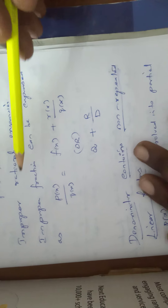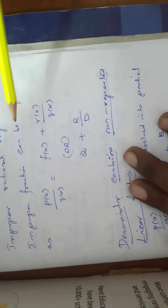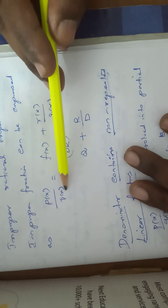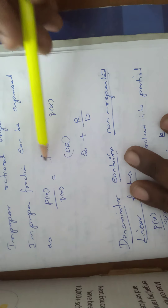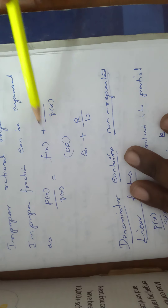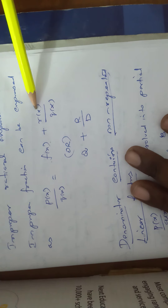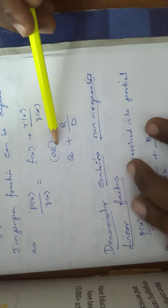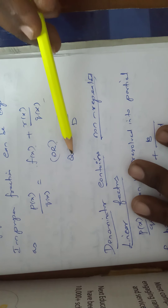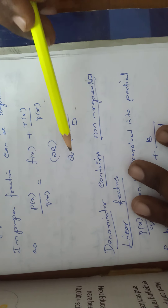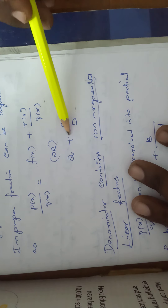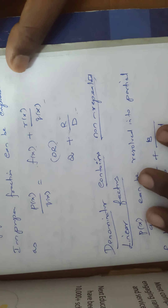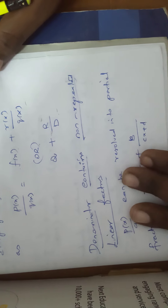The improper fraction can be expressed as P(x)/Q(x) = F(x) + R(x)/Q(x), or otherwise: quotient plus remainder by divisor.